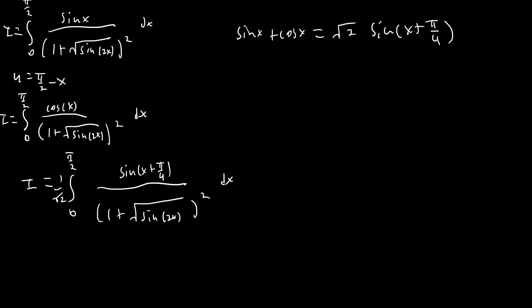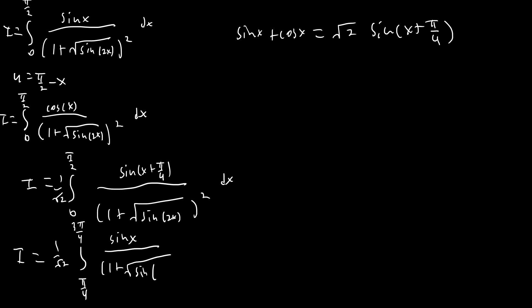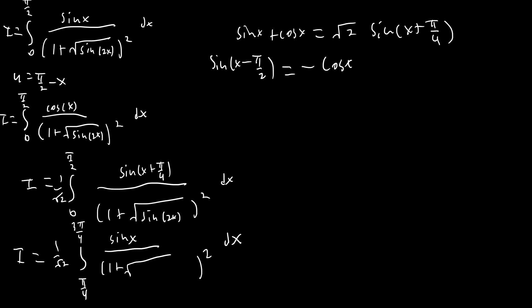After shifting, i equals 1 over square root 2 times the integral from pi over 4 to 3 pi over 4 of sine of x over 1 plus square root of sine of 2x minus pi over 2. Now sine of x minus pi over 2 equals negative cosine x, which gives us negative cosine 2x — but we'd rather have a positive cosine 2x.